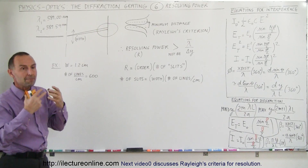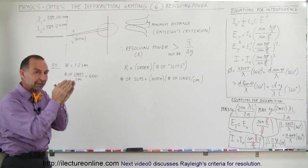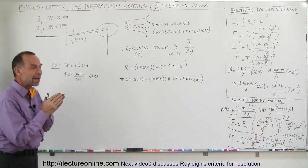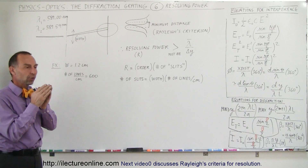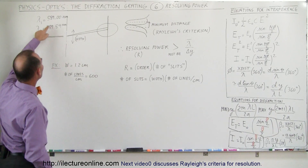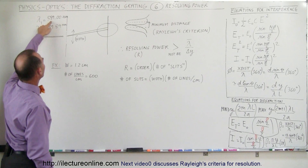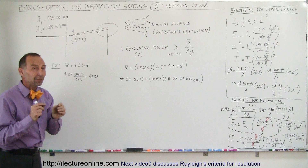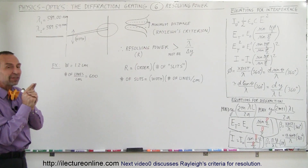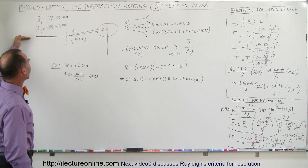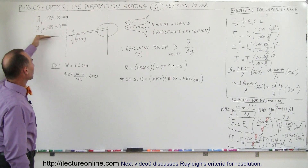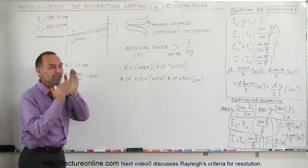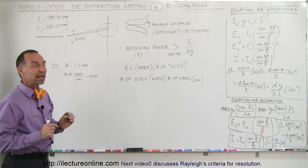We're looking at the light coming directly at us on the screen or through a microscope. For example, let's take the two lines of sodium. Sodium has what we call a doublet — a doublet in the yellow-orange light, with the first wavelength at 589 nanometers and the second at 589.59 nanometers. So they're very, very closely spaced together in wavelength.